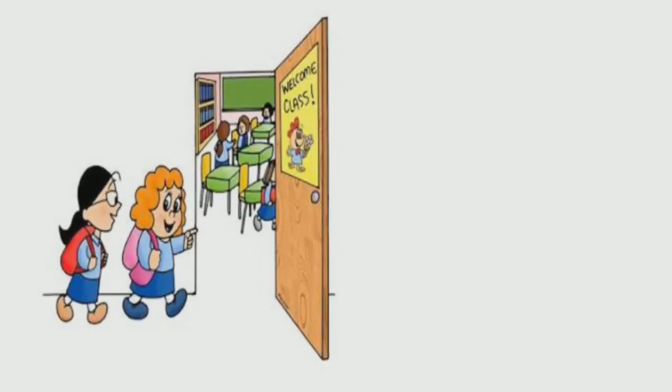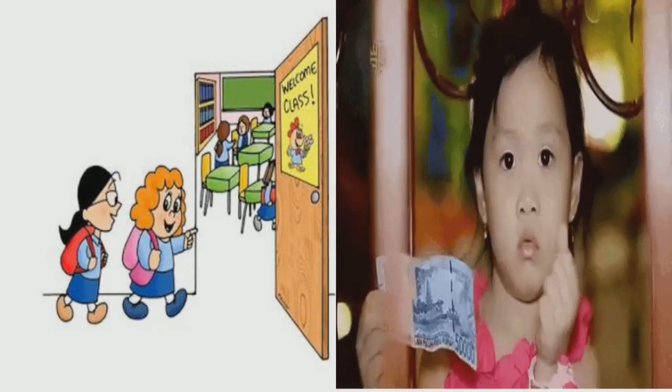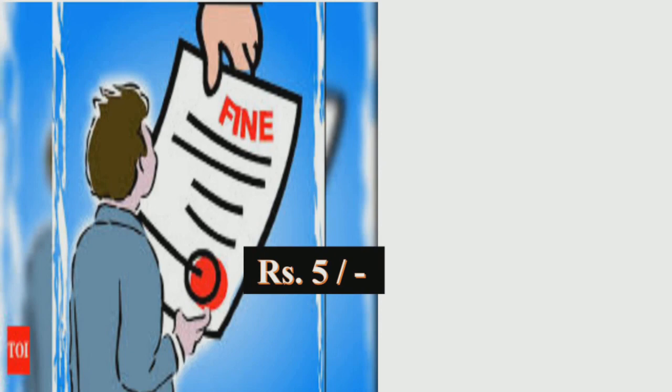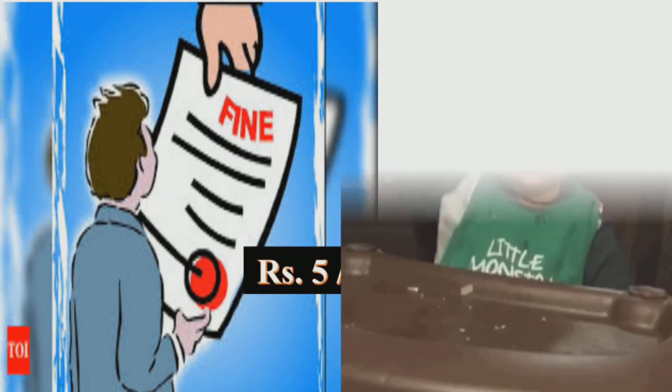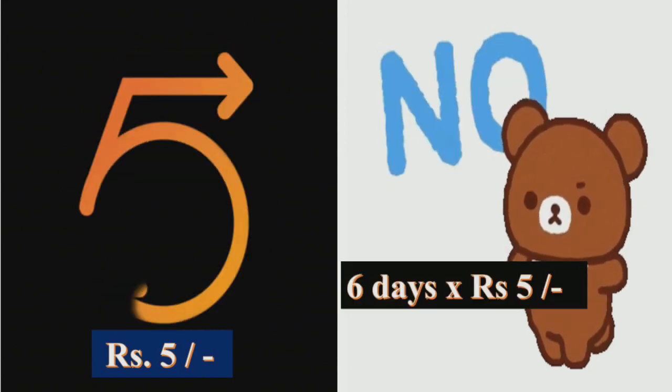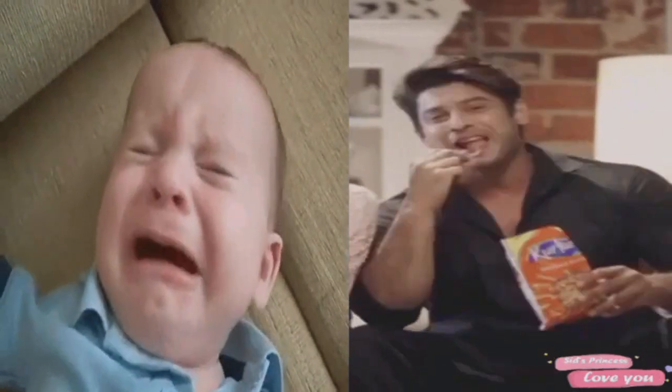As soon as she entered class, her ma'am said, 'Give me 30 rupees.' Thirty rupees?! But why? Did ma'am not bring lunch, or did your sister break something? No — 30 rupees was the charge of the fine, because one day without a leave application costs 5 rupees. My sister had not come to school for six days, so six days multiplied by 5 rupees equals 30 rupees. With 30 rupees you could buy six packets of kurkure — or six pencils!